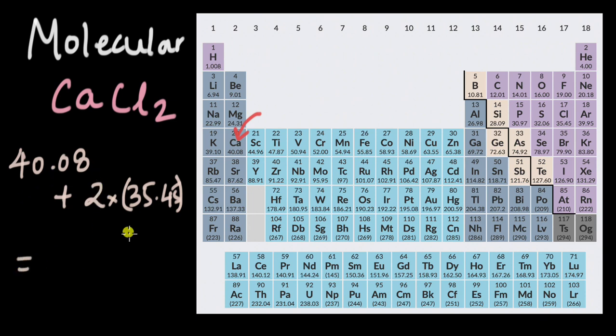When we do this, this comes out to be equal to 110.98 and this will be atomic mass unit, which is represented by small u because all of these numbers that you see below the symbol of the element, they are in atomic mass units. One atomic mass unit is equal to 1.67 into 10 to the power minus 24 grams.